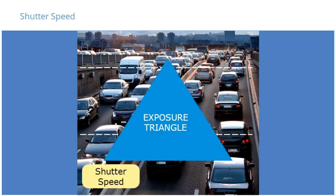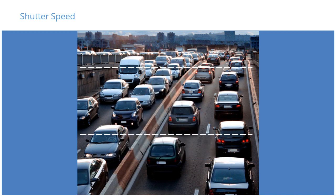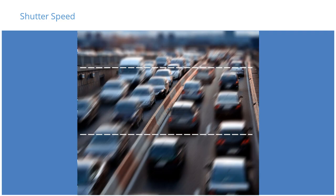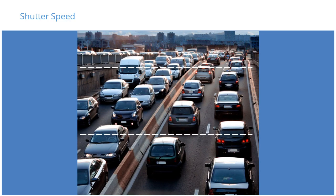The shutter speed is the duration of the exposure. Shutter speed measures how long the digital sensor is exposed to light, and is usually measured in fractions of a second. For objects in motion, shorter shutter speeds result in a clearer image. The longer the shutter speed, the more light sensitivity. However, movement becomes blurry and renders the images unusable for surveillance purposes. Many cameras adjust the shutter speed automatically to ensure sufficient light to the camera's image sensor.